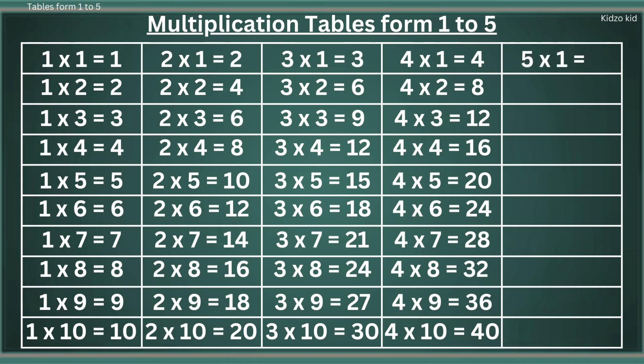5 1s are 5, 5 2s are 10, 5 3s are 15, 5 4s are 20, 5 5s are 25, 5 6s are 30.